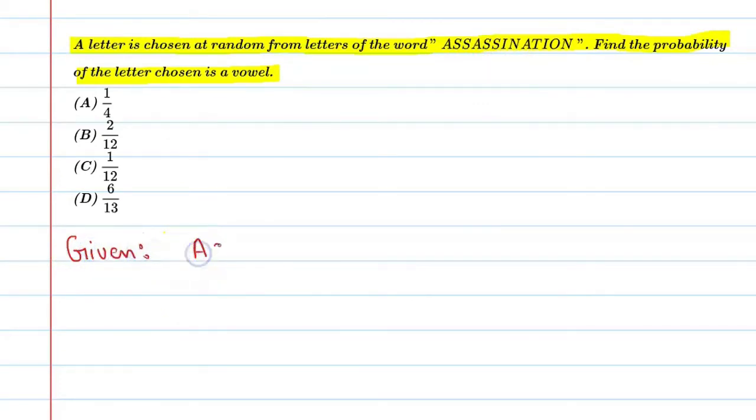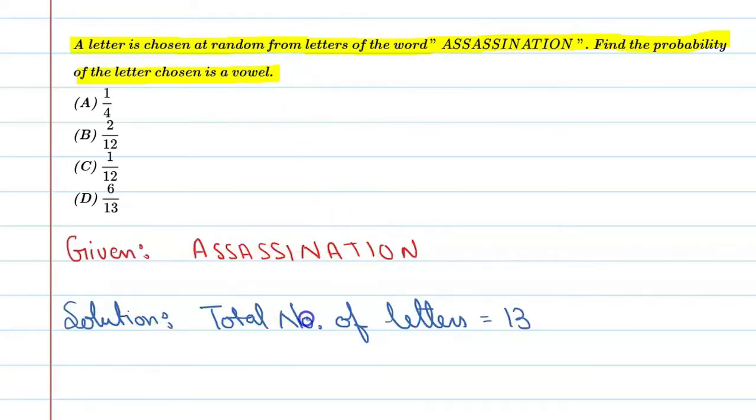So the word is A-S-S-A-S-S-I-N-A-T-I-O-N. Alright. So you can see that the total number of alphabets is 13. So let's start with 13.